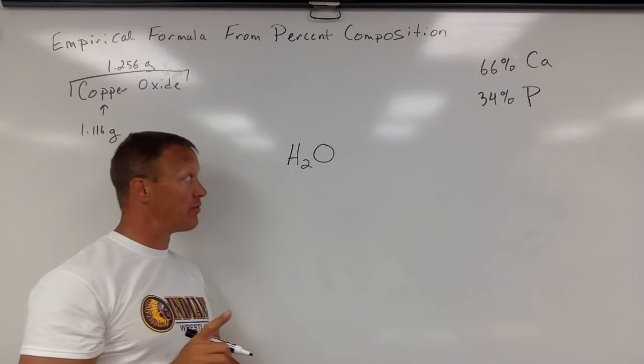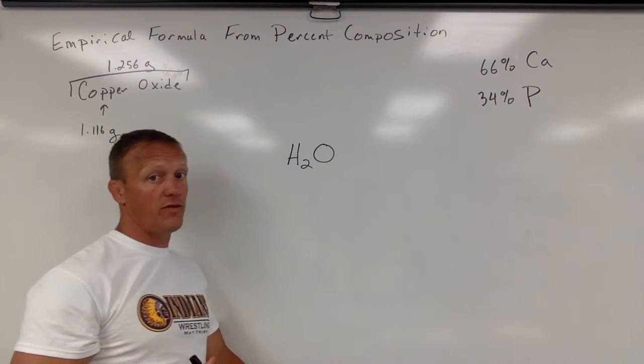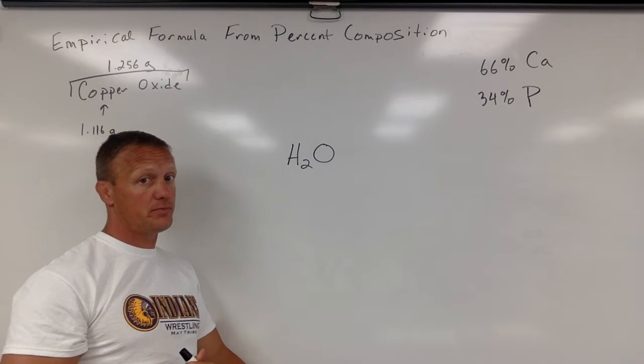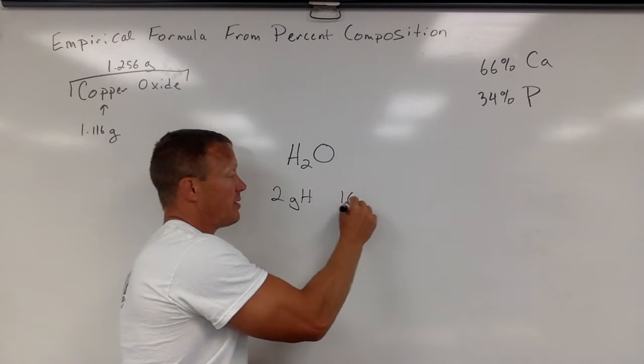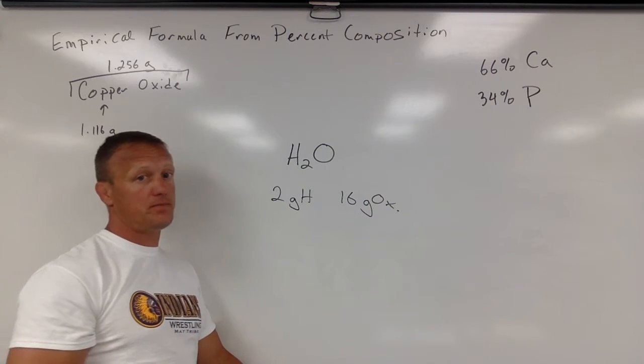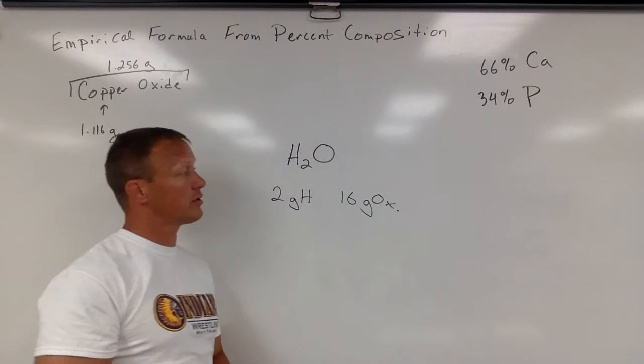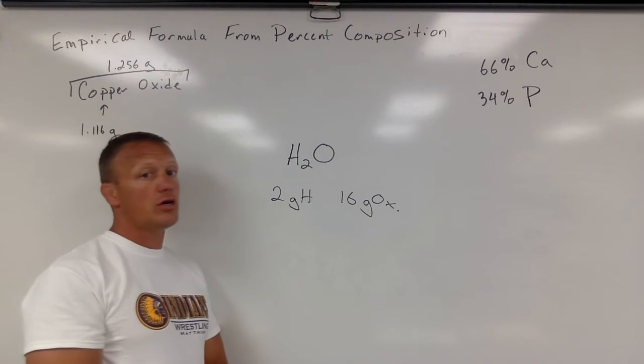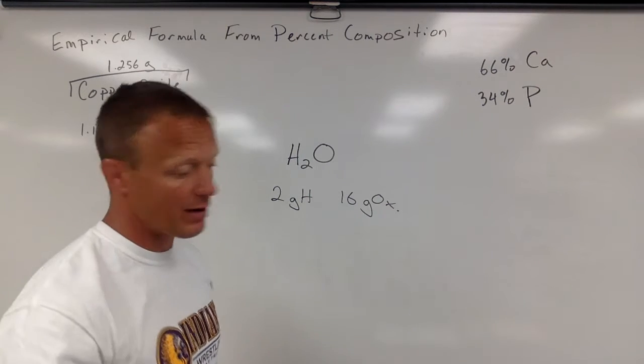What the formula does not mean is that there's two grams of hydrogen for every one gram of oxygen. Really there would be for every two grams of hydrogen there would be 16 grams of oxygen. Two moles is two grams for hydrogen, oxygen is 16 grams for a mole. So remember that the ratio is not in terms of mass, it's in terms of moles or number of atoms.